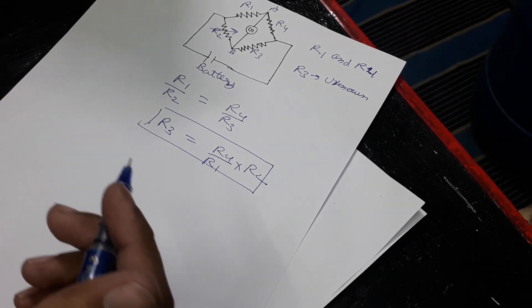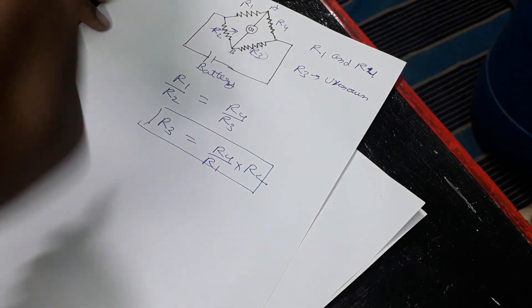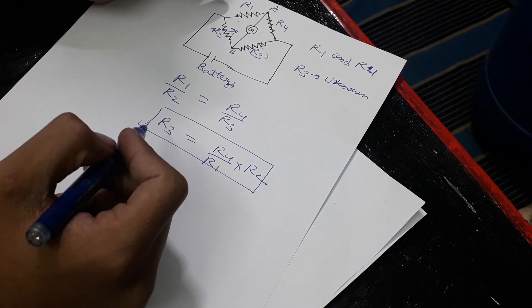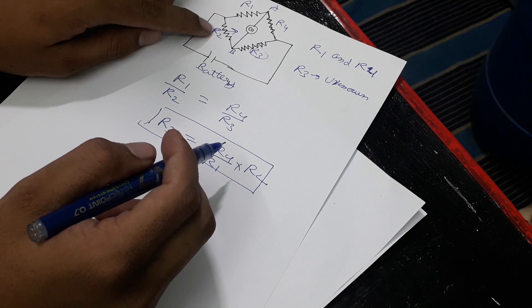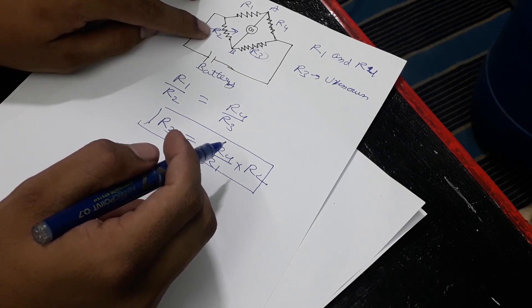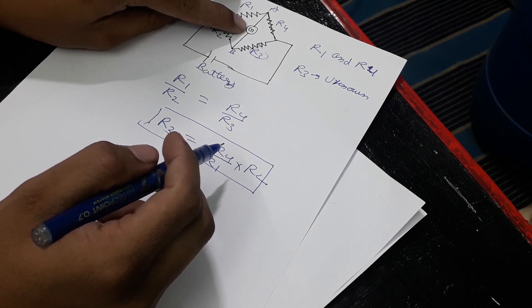Now let's talk about how to find the unknown resistance. For that we should know the R1 and R4 resistances. Then we have to adjust the variable R2 resistance till we get zero amps on the galvanometer.